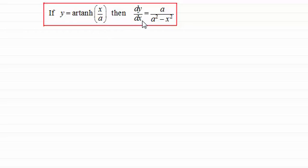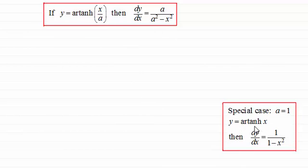And it can be shown that dy by dx equals a divided by a squared minus x squared. And if we take the special case when the constant a is 1, then we get y equaling the inverse tanh of x, giving us dy by dx equals 1 divided by 1 minus x squared. And I'd encourage you to try and remember these results because we're going to use them in further differentiation and also in integration.